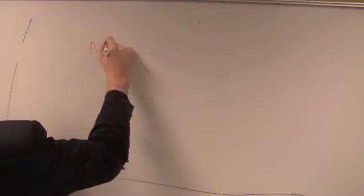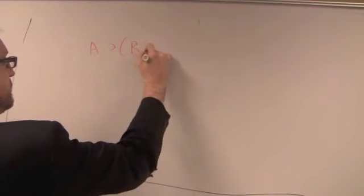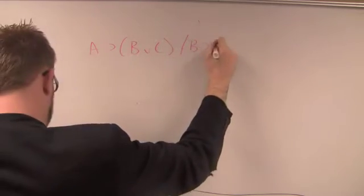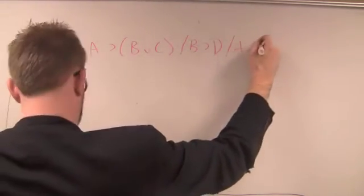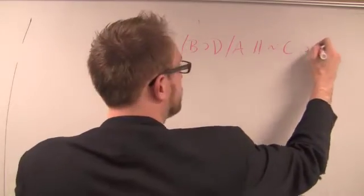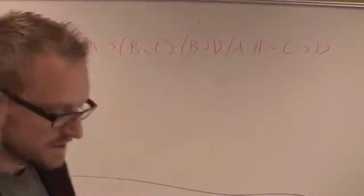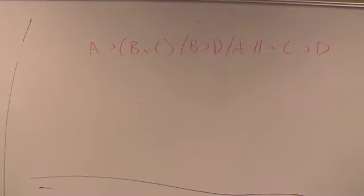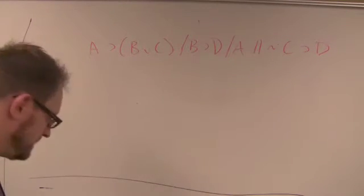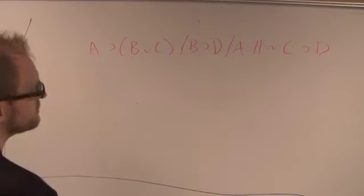Let's say we have A then B or C. B then D. A, therefore not C, therefore D. So let's assume that this is our argument. I hope you can see it up there. It's kind of hard to see it here. I'm going to switch pens here and use black instead.